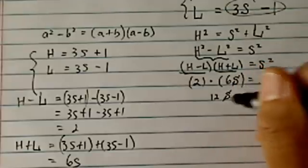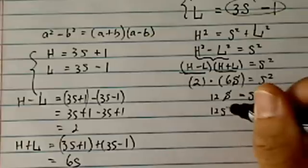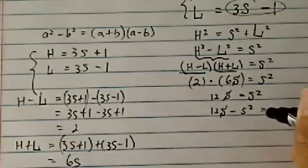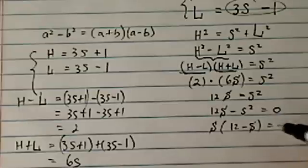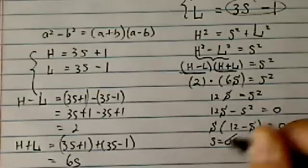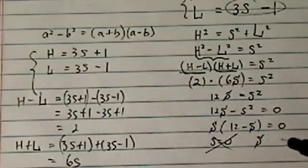So here I have 12S equals S squared. Let's move it all over to the same place so I can factor it. S times 12 minus S equals 0. S equals 0, obviously that's not possible because I have a triangle. S equals 12, this looks good.